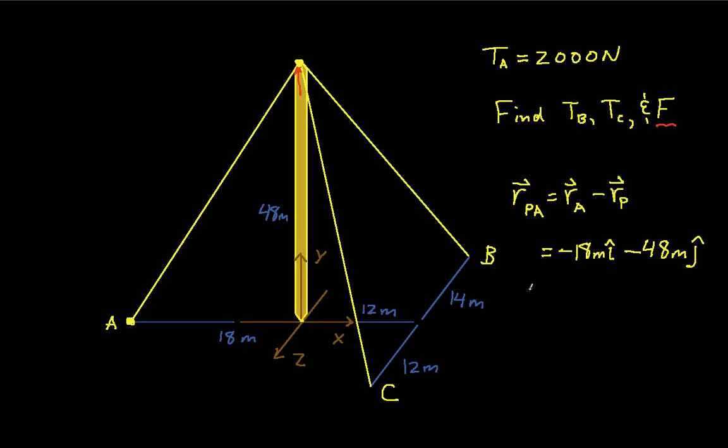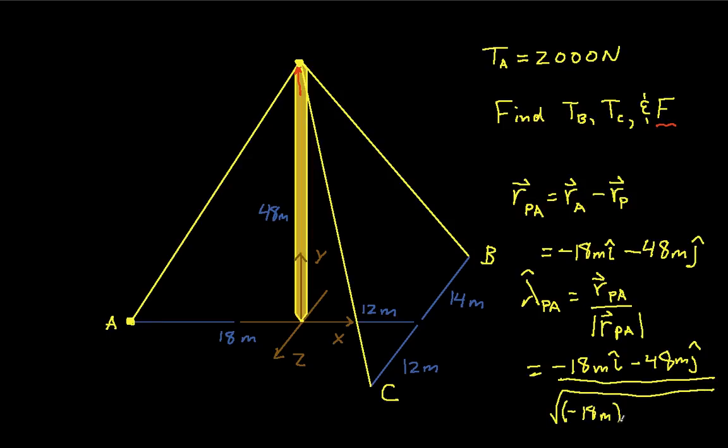So this again gives us the relative vector pointing from P, this point here, down to A. And now we want to get a unit vector for this, which we'll define as lambda PA. And this will be R PA divided by the magnitude of R PA. So R PA is minus 18 meters i hat minus 48 meters j hat, divided by the magnitude of R PA is just the square root of minus 18 meters squared plus minus 48 meters squared.